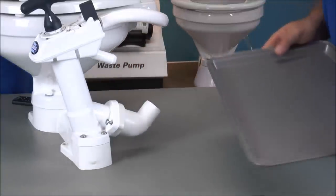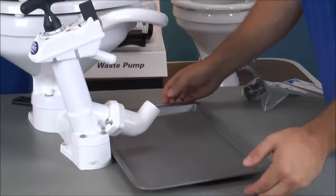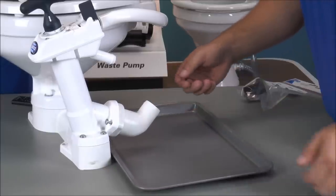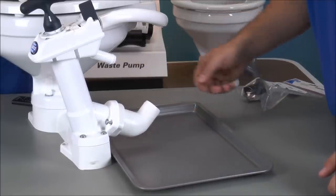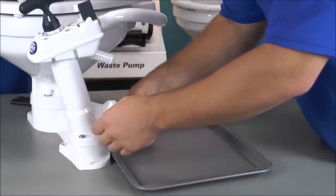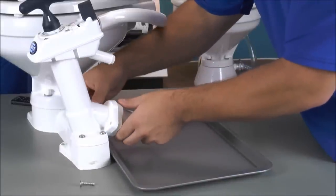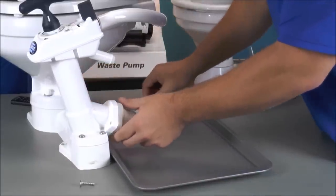Now the first thing you want to do is take your pan and slide it underneath the discharge elbow. The reason for this is when I take off this elbow there could be some residual waste in that hose line. Now I'm going to take off the two flathead screws, which I have pre-loosened, and now the elbow is free to remove.